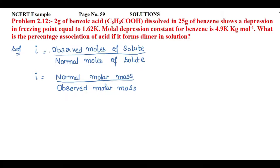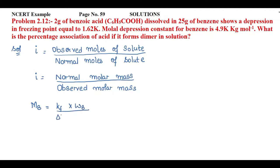Our main target is to first find the observed molar mass. The formula we will use is: mb = (Kf × wb) / (ΔTf × wa), where wa must be taken in kg.